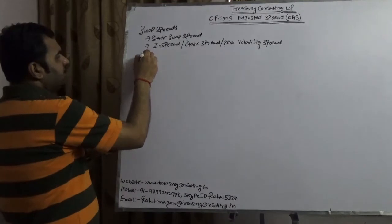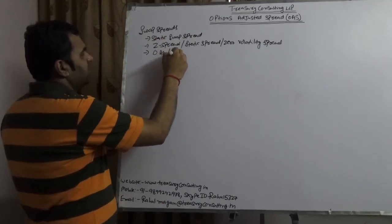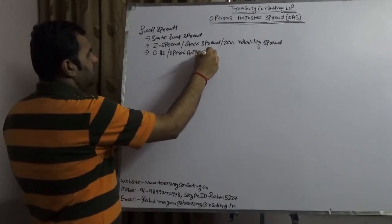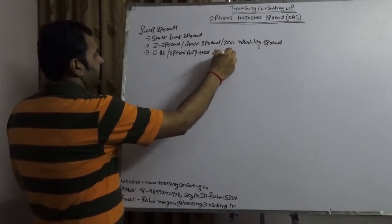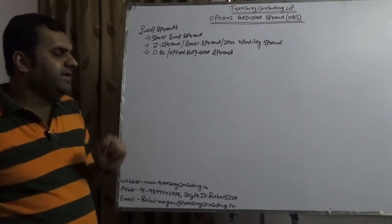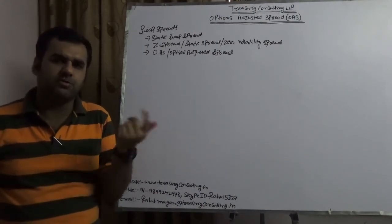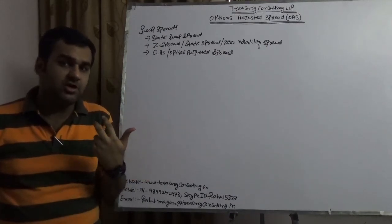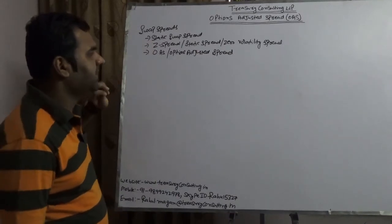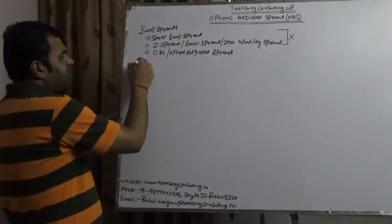One is known as static spread, one is known as Z-spread, and one is known as OAS, which is also known as options adjusted spread. Did we ever think why we are using options here? 99% of the answers would be: this must have some link with options. Of course the guess is correct, but this is not 100% correct. We need to appreciate that static spread and Z-spread both are not talking about something which is known as embedded derivatives.